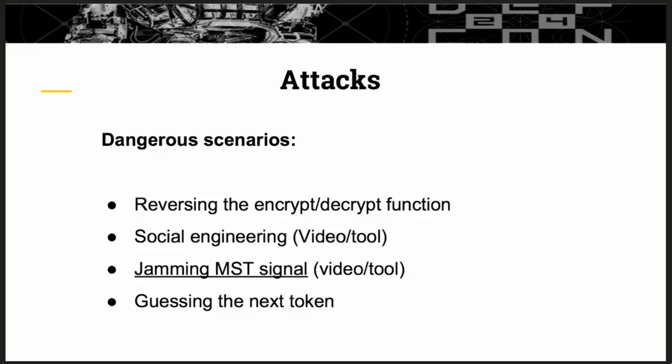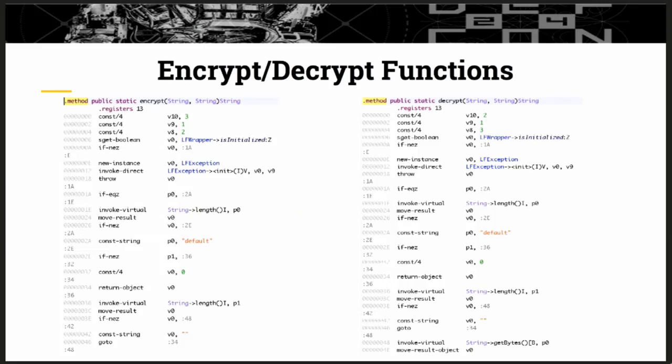Let's get to the interesting part — the dangerous scenarios. We're going to talk about reversing the encrypt and decrypt functions, social engineering, jamming MST signals, and guessing the next token. When an attacker is able to reverse these functions, they are able to get almost all the information from the encryption functions, because they are used across many methods.